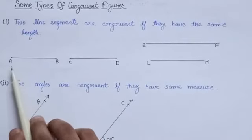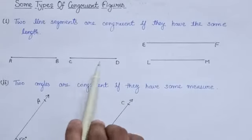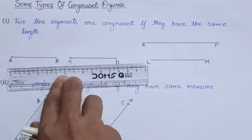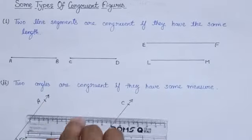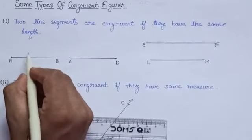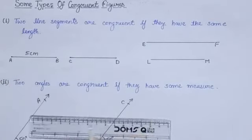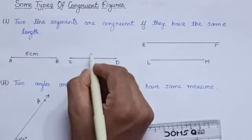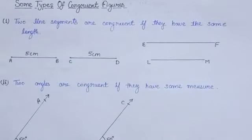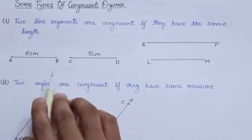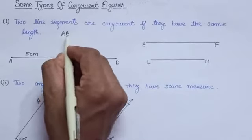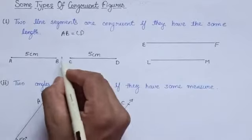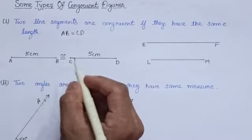Let us see here, there are two line segments AB and CD. If we measure the length of these two line segments, then you can see that AB measures 5 cm and CD also measures 5 cm. As these two line segments AB and CD have the same length, AB equals CD. Hence, we can say AB is congruent to CD.